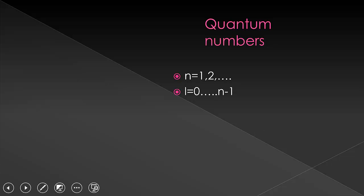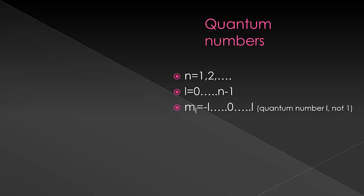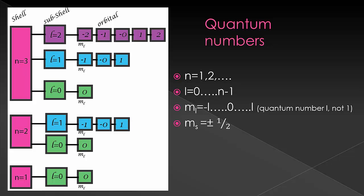The next one is M sub L, and M sub L can be anywhere from negative L all the way up through L. This is needed because think back to when we're talking about P orbitals — we had three different P orbitals. We need something to differentiate between those three different P orbitals, and so M sub L tells us what those are. Our last one is M sub S, and this actually describes the individual electrons that are in the orbitals. Each orbital can hold two electrons, one has a plus one-half spin, and one has a minus one-half spin. The logic flow works like the chart shown. We'll go into each one in more detail in the following slides.